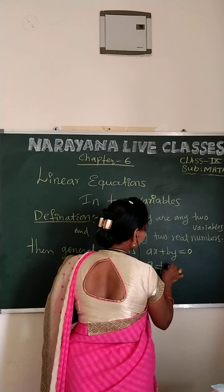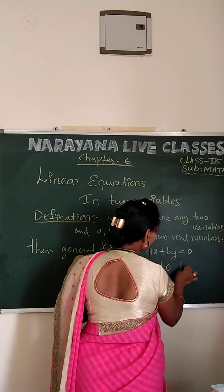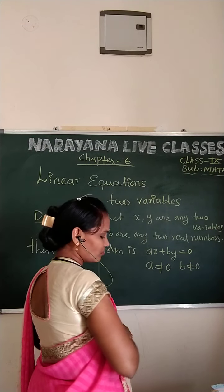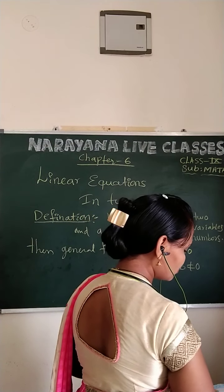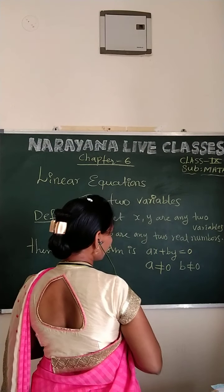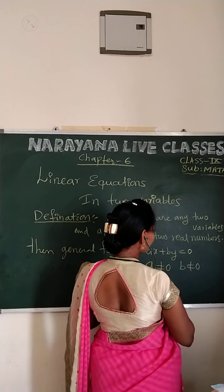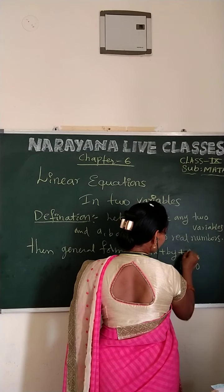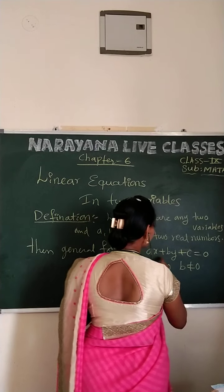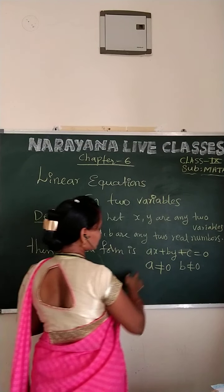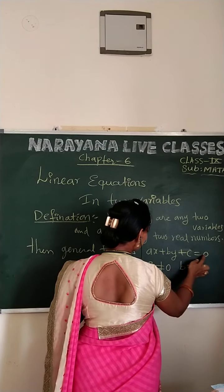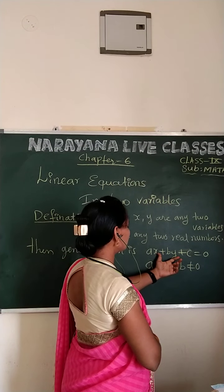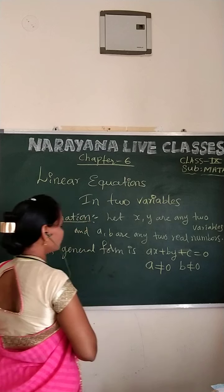Here, A is not equal to zero and B is also not equal to zero. The general form is AX plus BY plus C is equal to zero. This is called the general form of a linear equation in two variables.